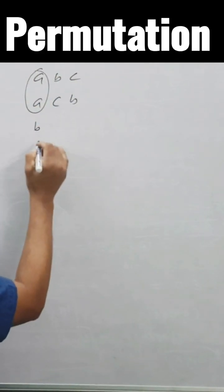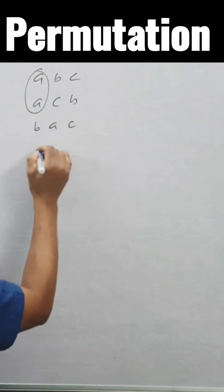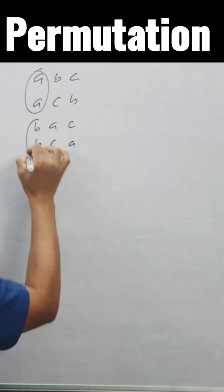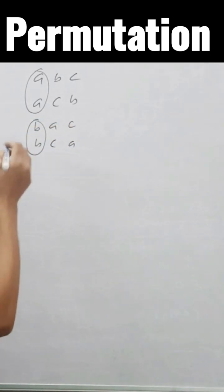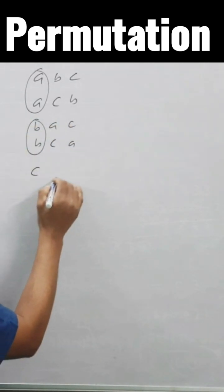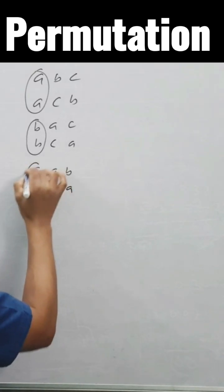A first. Now I'm keeping B first. What is this? A C B, C A. Look at this. I kept B first. Now if I take C first: C A B, C B A. Look at this.